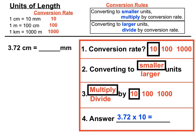When we multiply 3.72 by 10, the shortcut is to move the decimal point one place to the right for each zero in 10, 100 or 1000. Moving the decimal one place to the right gives us 37.2. So 3.72 centimetres converts to 37.2 millimetres.